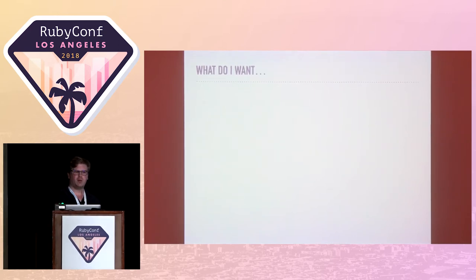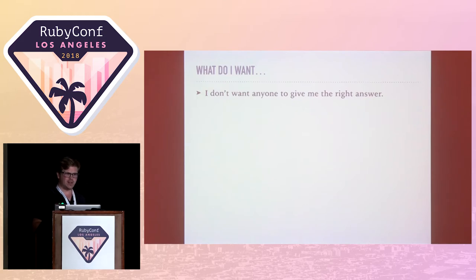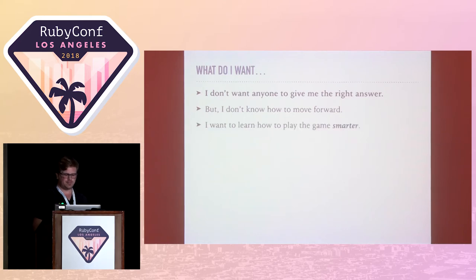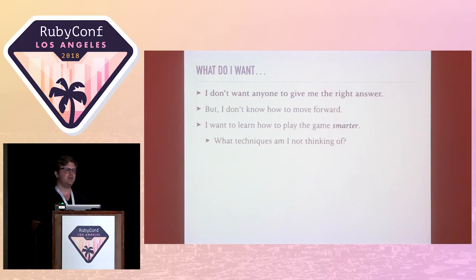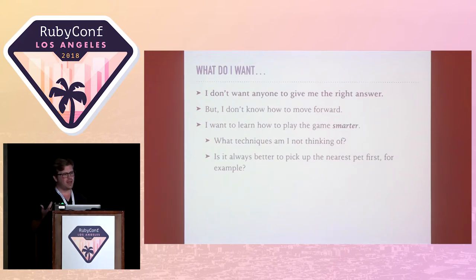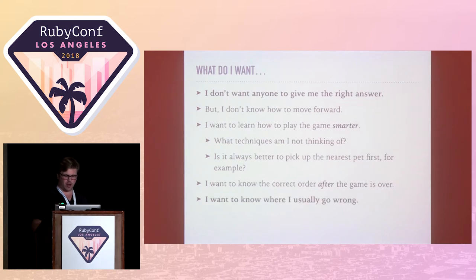I was thinking the game has 20 total levels, and if I can't get past 12, how am I going to get past 13, 14, and so on? So I thought to myself, what's the problem? What do I want out of this game? How can I help myself progress? I didn't want anybody to give me the right answer to the level, because that is legit cheating. I didn't want to progress without actually working. But I also didn't know how to move forward. I wanted to learn how to play the game smarter — there must be something I'm missing. What techniques am I not thinking of? What concepts can I use to understand how to play better?